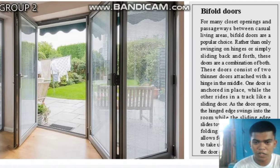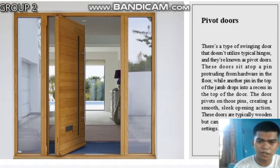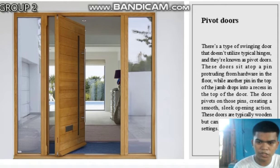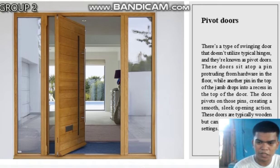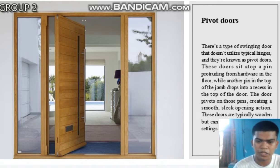This allows for a large door opening to take up less floor space when the door is open. The next type is pivot doors — a type of swinging door that doesn't utilize typical hinges. These doors sit atop a pin protruding from hardware in the floor, while another pin at the top fits into a recess above. The door pivots on these pins, creating a smooth, sleek opening action. These doors are typically wooden but can be steel in commercial settings.